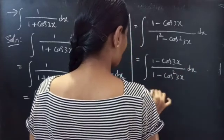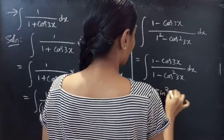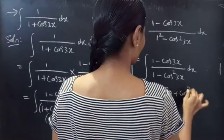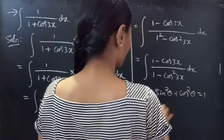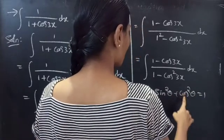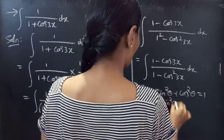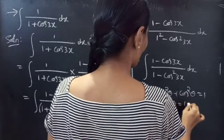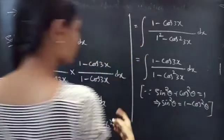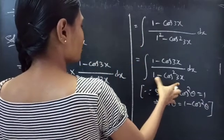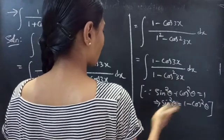Since we know that sin² θ plus cos² θ equals 1, if we take cos² θ to the right-hand side, we get sin² θ equals 1 minus cos² θ. So we can replace 1 minus cos² θ by sin² θ.